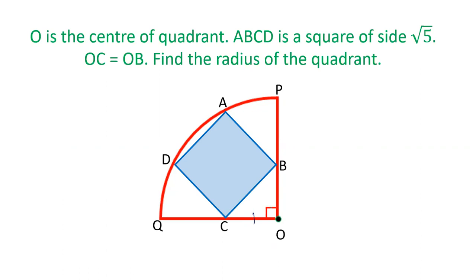It is also given that OC is equal to OB and the side of this square is √5. We have to find out the radius of this quadrant. Let's see how we can solve this question.